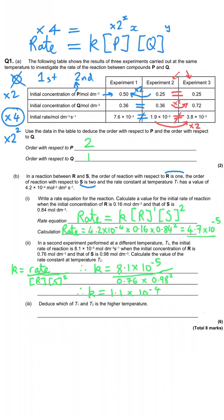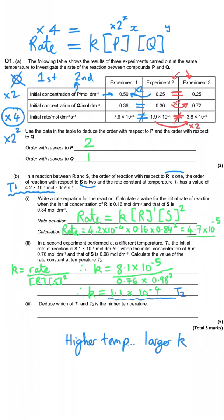Finally, we have to deduce which temperature — T1 or T2 — is higher, based only on the rate constant values. The rate constant at T1 was 4.2×10⁻⁴, and at T2 it's 1.1×10⁻⁴ — a smaller value. Since a higher temperature gives a larger rate constant, T1 is the higher temperature.